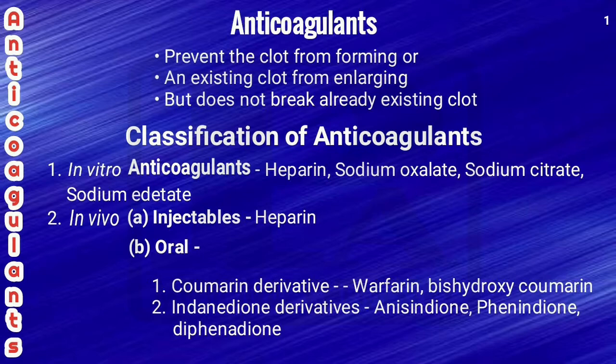Examples of in vitro anticoagulants are heparin, sodium editate, sodium citrate, and sodium oxalate. In vivo anticoagulants are classified into two types: injectables and orals. Under injectables, the only example is heparin. Under orals, there are two types: coumarin derivatives and indandione derivatives. Examples of coumarin derivatives are warfarin and bishydroxycumarin. Examples of indandione derivatives are anisindione, phenindione, and diphenindione.